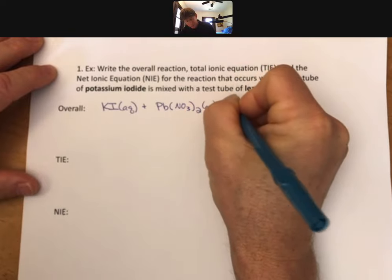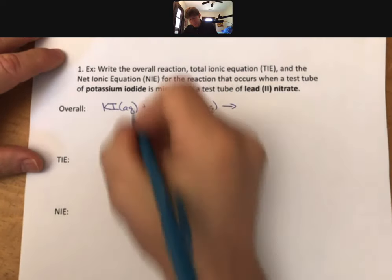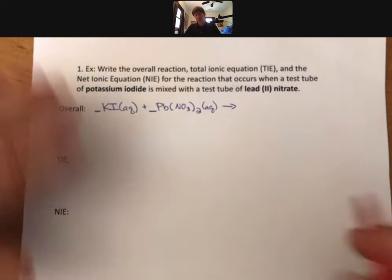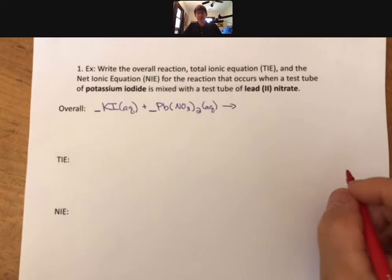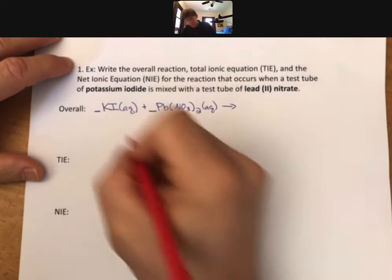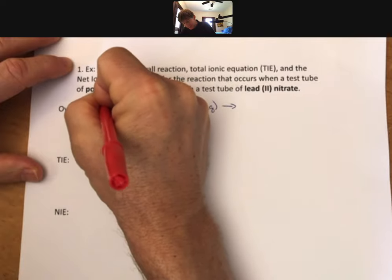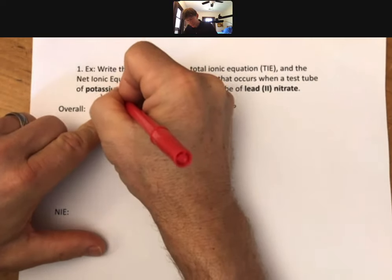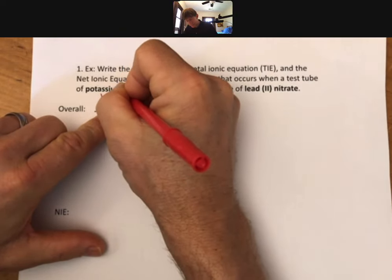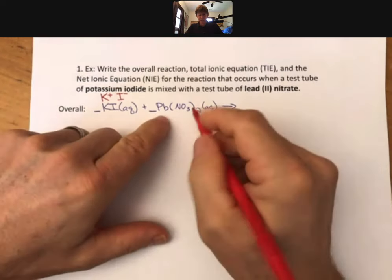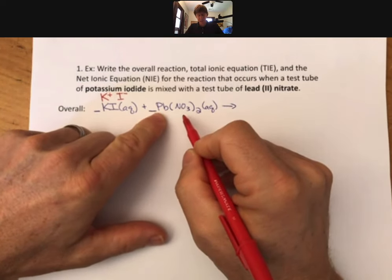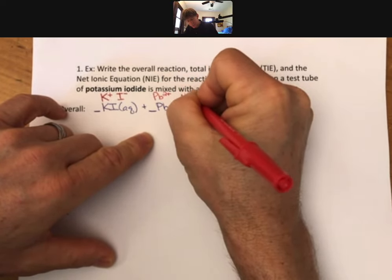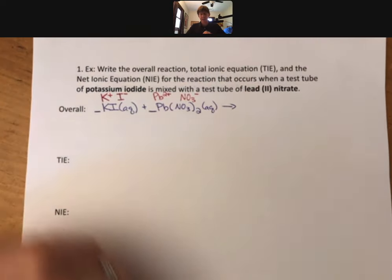You will have to put these together and we will have to balance this as well. For double replacement reactions, you can think of this like this: we know that these are ionic compounds, and so this is K+ and I-, this is an ionic compound as well, it's made up of two ions: Pb2+ and NO3-.